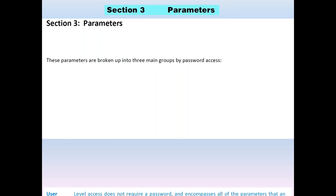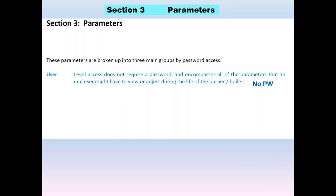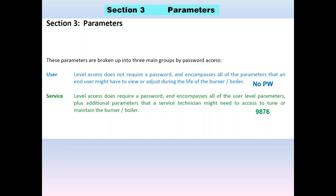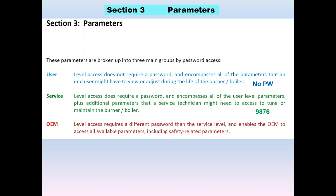The LMV3 parameters are broken up into three main groups by password access. The user level doesn't require a password, and it encompasses basic parameters an end user might have to adjust. The service level has a password — factory default 9876 — and gives most of what the general technician setting up the boiler will do, like fuel curves and purge times. Finally, we have OEM level, which has access to all parameters. The OEM default factory password is 'entry'.